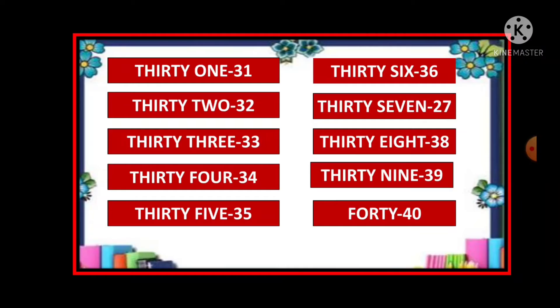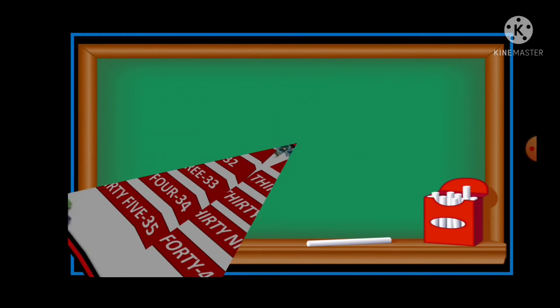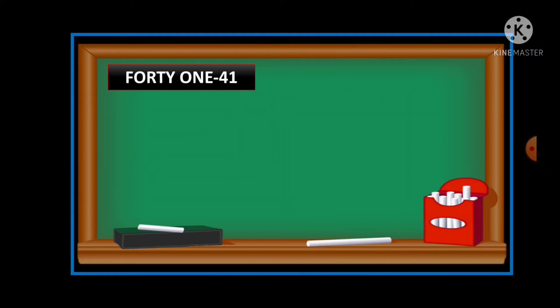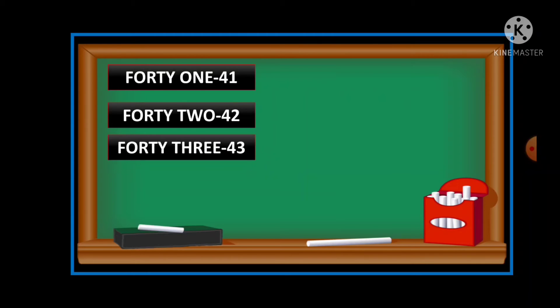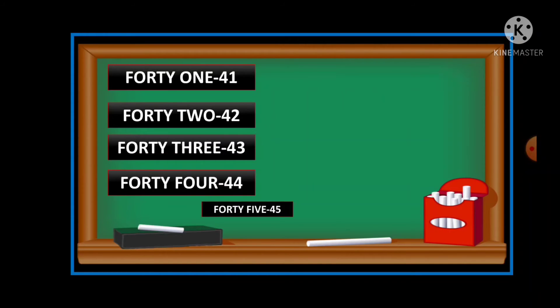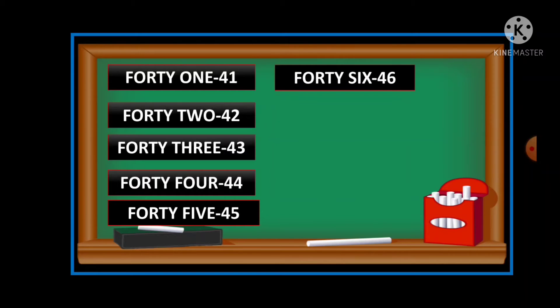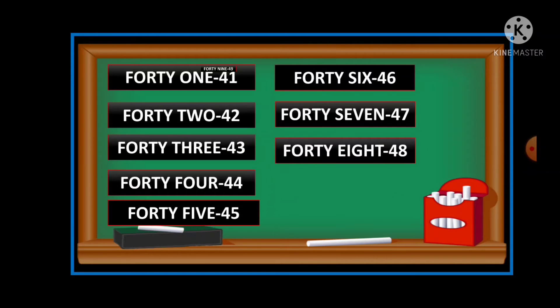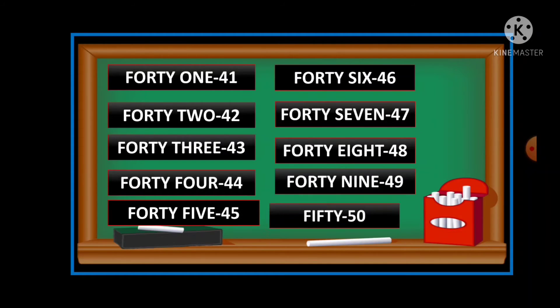And 40. F-O-R-T-Y, forty. Don't write F-O-U-R-T-Y. F-O-R-T-Y. Now what is the 40 spelling? F-O-R-T-Y and just write O-N-E: 42, 43, 44, 45, 46, 47, 48, 49, 50.